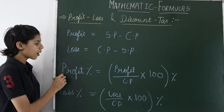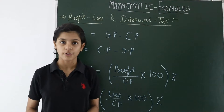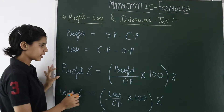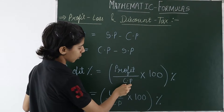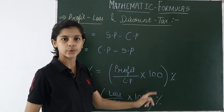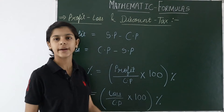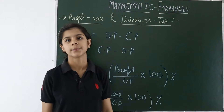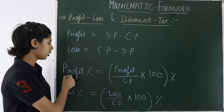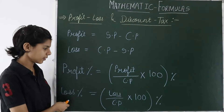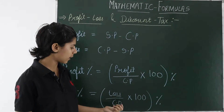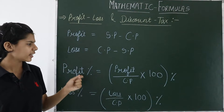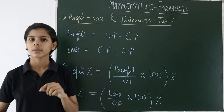Next is Profit Percent. If I am having a Profit and want to calculate the percentage of that Profit, the formula is Profit divided by Cost Price multiplied by 100 — because we are calculating percentage. Profit will be divided by Cost Price and multiplied by 100, and then we will get Profit Percent. Same for Loss Percent — just Loss will come in place of Profit: Loss divided by Cost Price into 100. These are very important formulas for Profit and Loss.